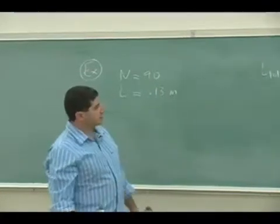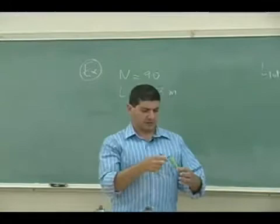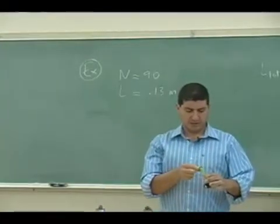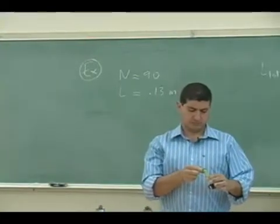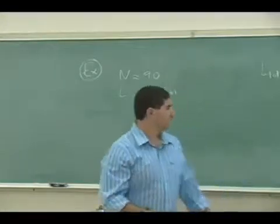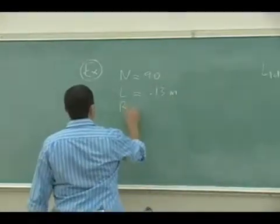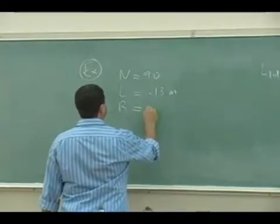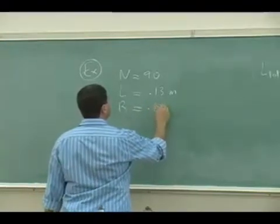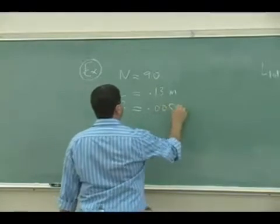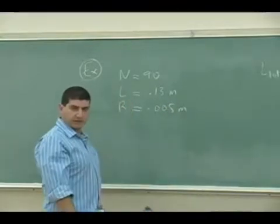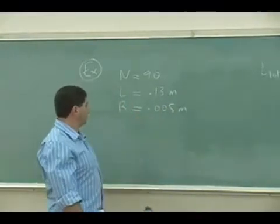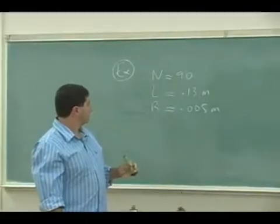And then its area, well, I'll give the radius here. Let's say the radius looks like about half a centimeter. Half a centimeter, that would be like that, right? Half a centimeter, so 0.005 meters.